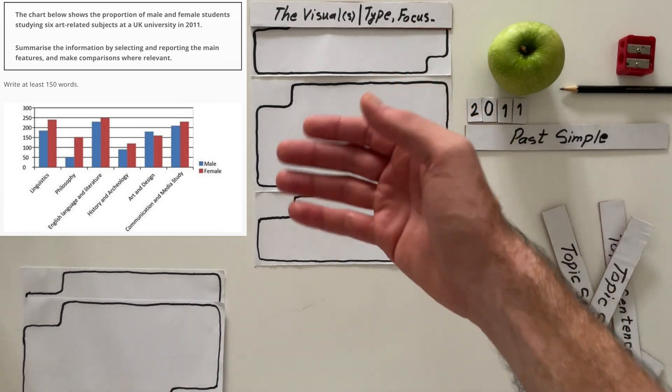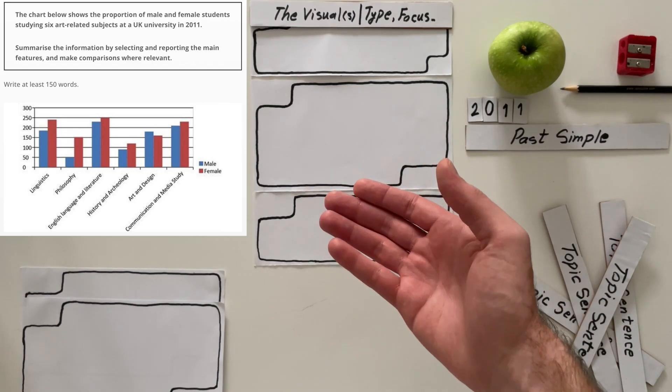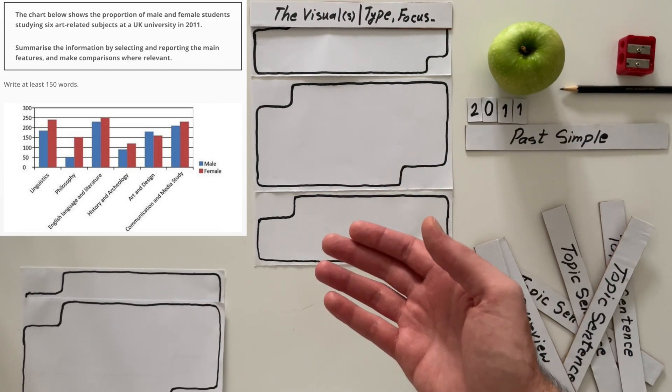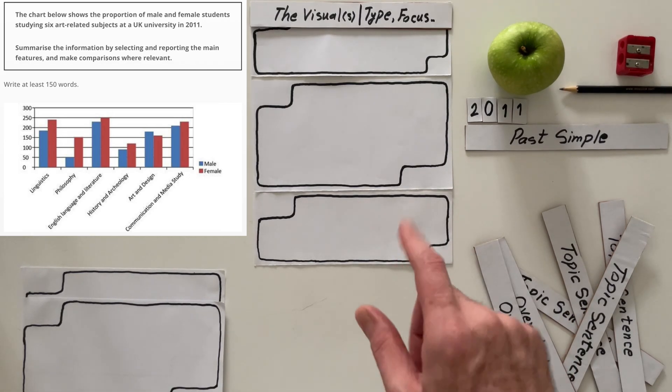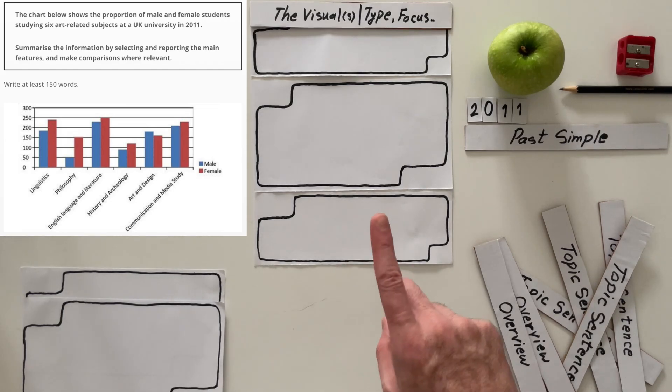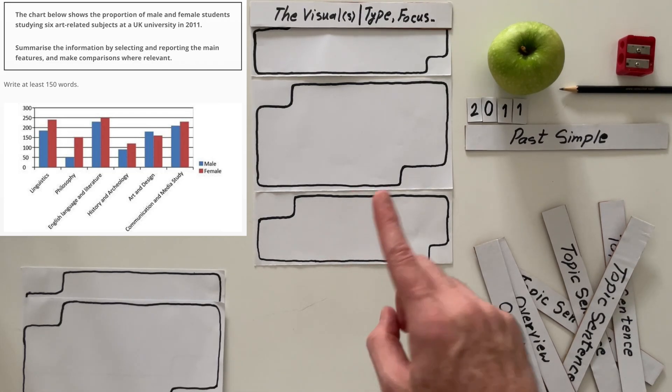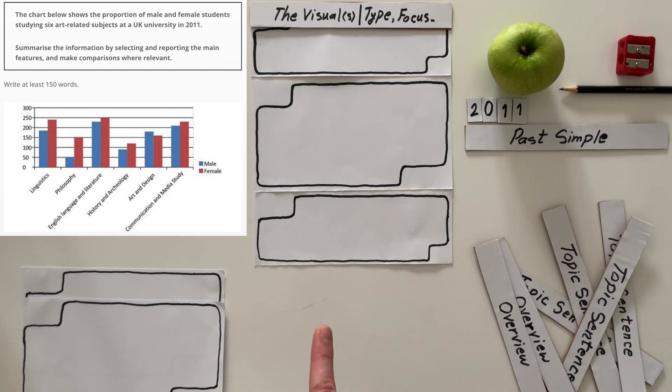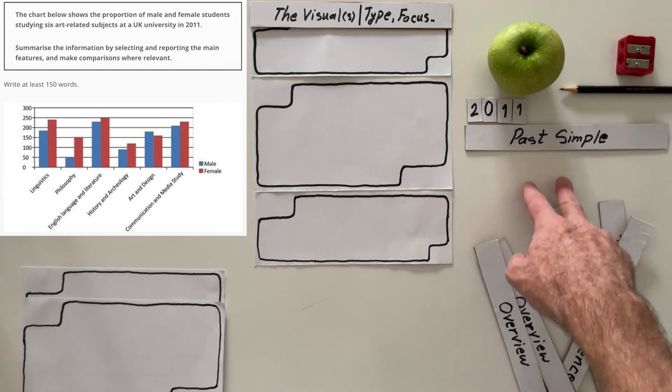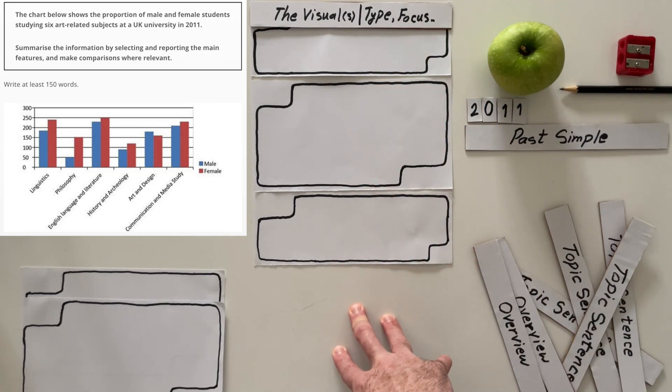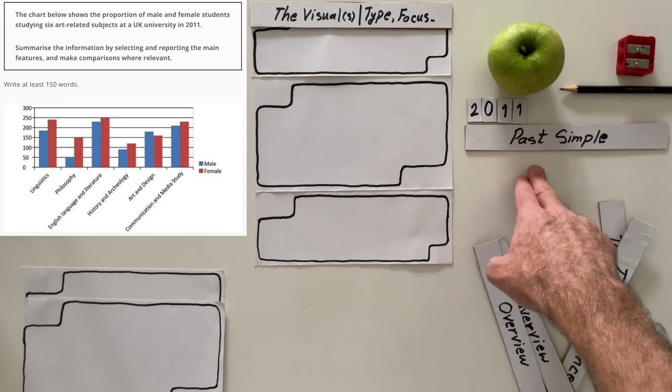Now we should continue. As I was saying about what this bar chart shows, I see six categories and the number of students. The categories are linguistics, philosophy, English language and literature, history and archaeology, art and design, communication and media study. And the focus is on only one university. We don't know the name of that university. It is located in the UK. And this data is from 2011. And because of that I'm using past simple. That means almost all my sentences, almost, except maybe the very first sentence, must be in past simple tense.